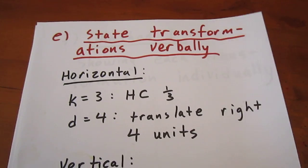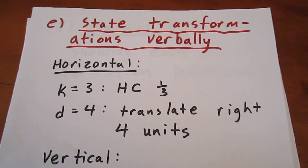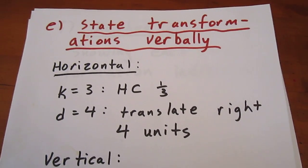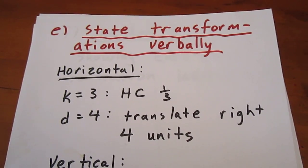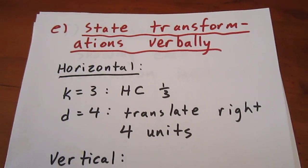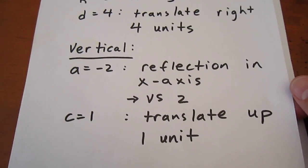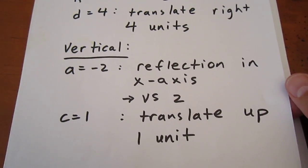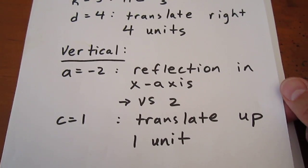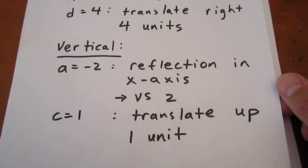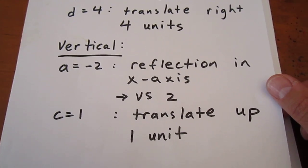We'd like to state the transformations verbally. k equaling 3 means we have a horizontal compression of 1 third. d equaling 4 means we translate to the right 4 units. For our vertical transformations, we have 3 of them: a value of negative 2 means a reflection in the x-axis followed by a vertical stretch by a factor of 2, and a c value of 1 means we translate up 1 unit.